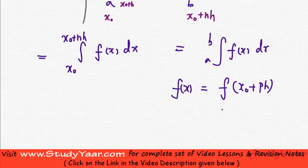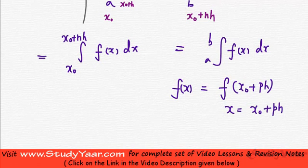What I want to do is make a substitution x is equal to x0 plus ph in this particular integral. When I do that, what I have is dx is equal to—this is a constant—so you are going to have h into dp.